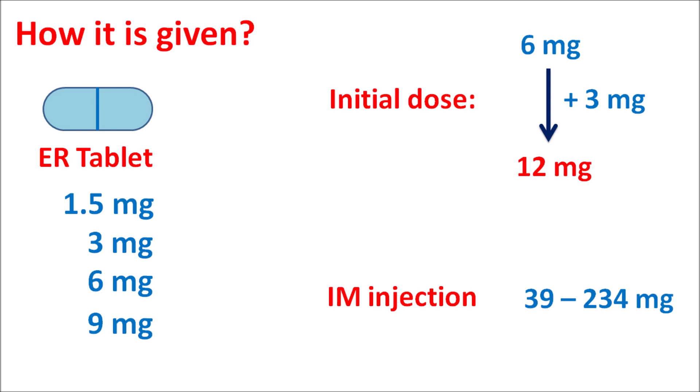In summary, paliperidone is a second-generation atypical antipsychotic that blocks D2 receptors and 5-HT2A receptors at the mesolimbic pathway to reduce dopaminergic transmission and positive symptoms, while at the mesocortical pathway it blocks 5-HT2A receptors to improve glutamate release and reduce negative symptoms. It produces fewer extrapyramidal side effects compared with typical antipsychotics and is available as an extended release tablet or as paliperidone palmitate intramuscular injection.